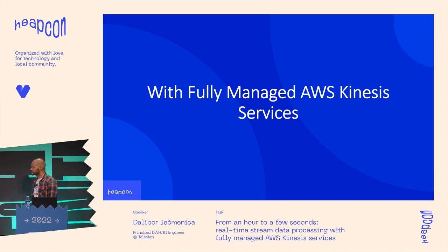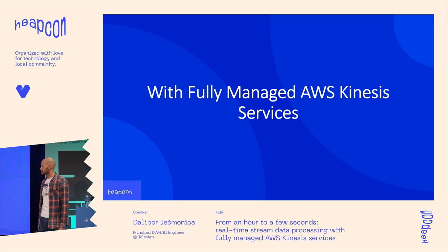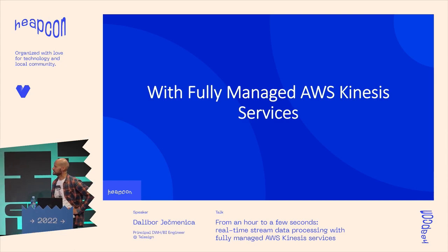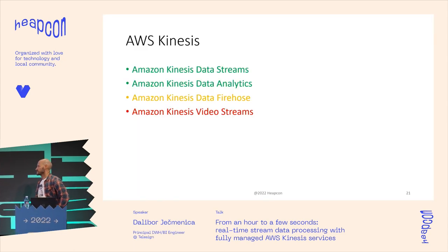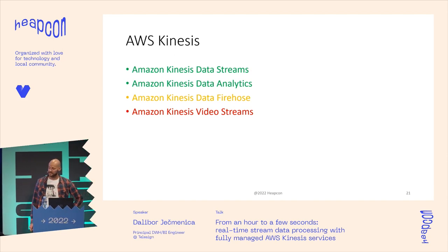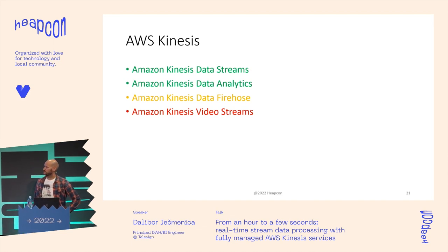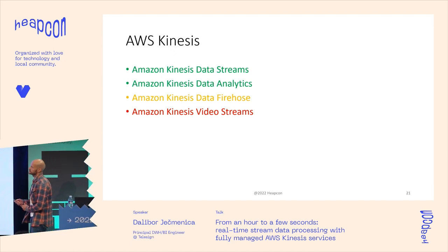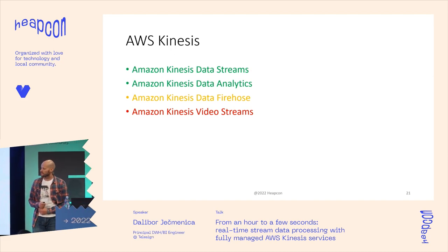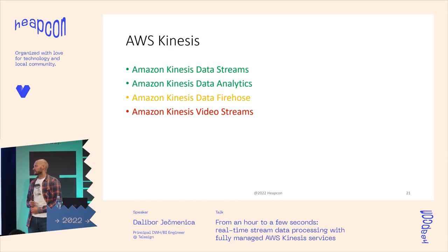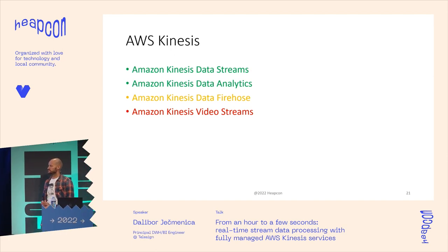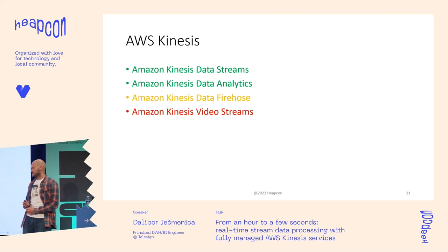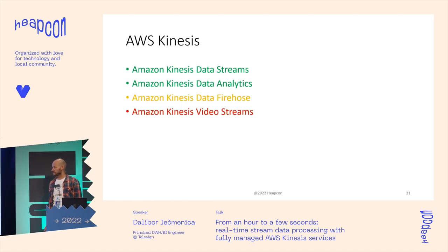The most interesting part — fully managed AWS Kinesis services — covers the technology in our new solution. AWS Kinesis is a bundle of four services: Kinesis Data Streams, Kinesis Data Analytics, Kinesis Data Firehose, and Kinesis Video Streams. The first two are used in our new architecture for this use case. Kinesis Data Firehose is used at Telesign for other batch processes. Kinesis Video Streams is just a media service that we don't use.